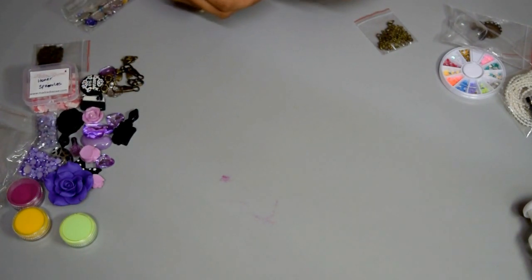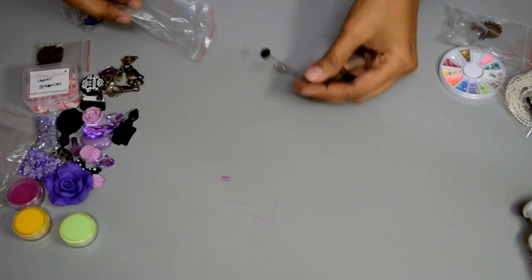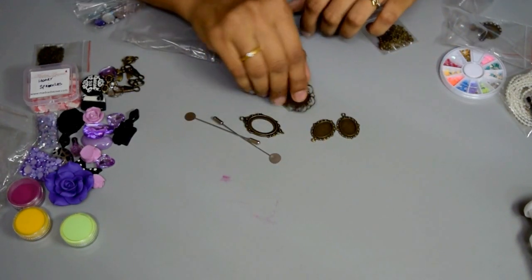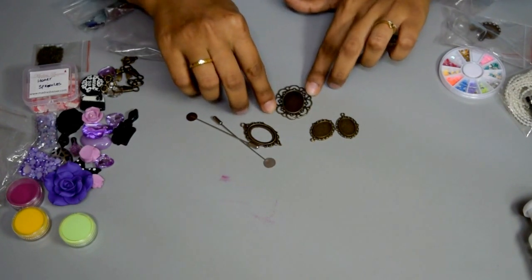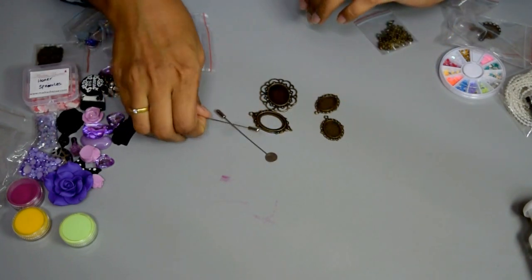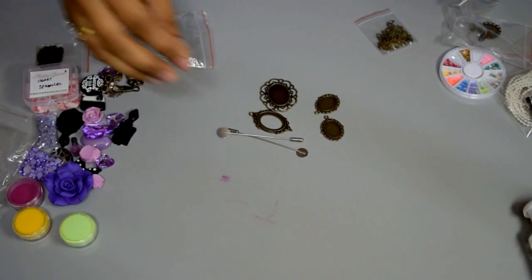Then I got this. Cabochon settings. This is one big setting. Then there are two small. These are I guess brooch pins.